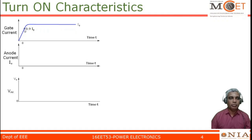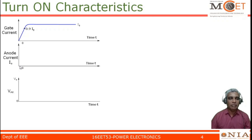The gate current reaches 90 percent of its final value Ig — that is 0.9 × Ig — at a particular instant in time. Once the gate current is applied and the device turns on, the anode current will slowly increase. As with any real device, the anode current cannot increase instantaneously — it takes some time to reach its final value IT, which is the load current the device carries when completely turned on.